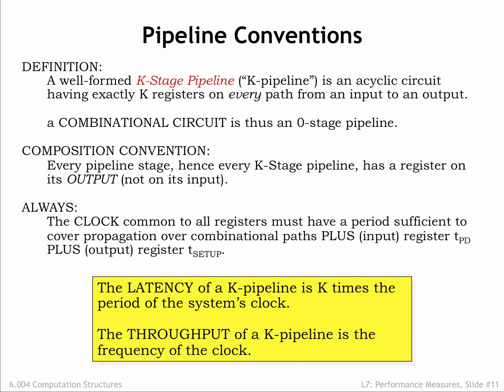The latency of a K-pipeline is K times the period of the system's clock, and the throughput of a K-pipeline is the frequency of the system's clock, in other words, 1 over the clock period.